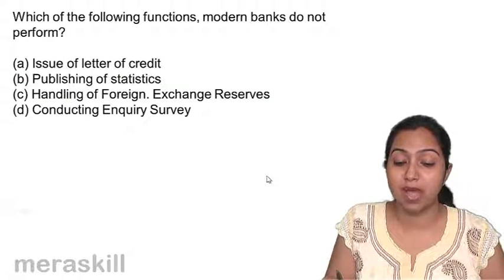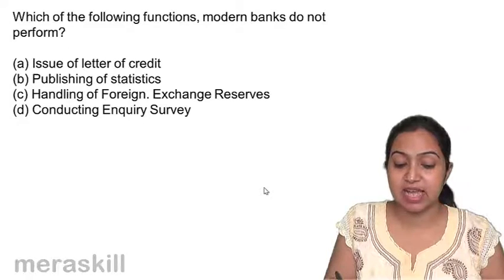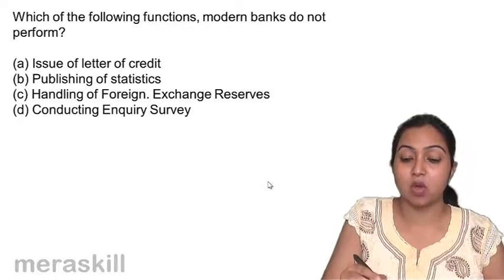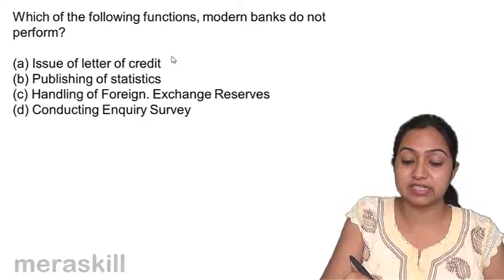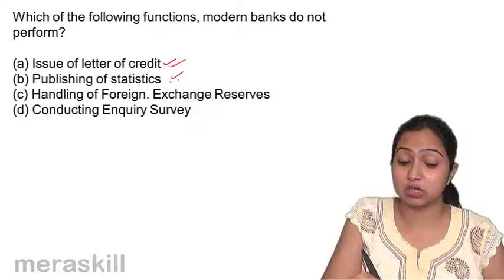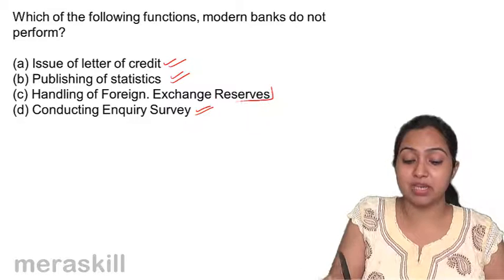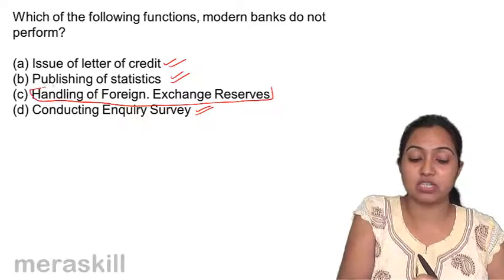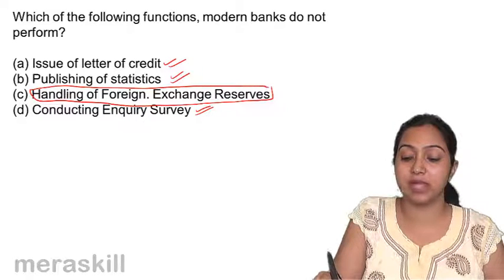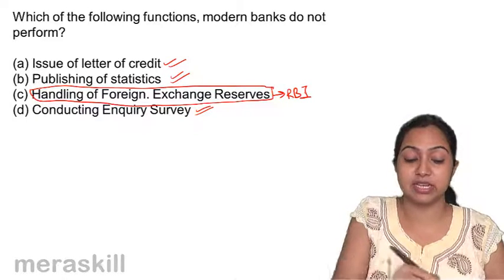Which of the following functions do modern banks not perform? The options are: issue of letter of credit, publishing of statistics, handling of foreign exchange reserves, and conducting inquiry surveys. Banks do issue letters of credit, publish statistics, and conduct inquiry surveys. However, handling of foreign exchange reserves is not done by commercial banks — it is done by the RBI, which we will study later.